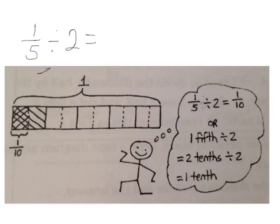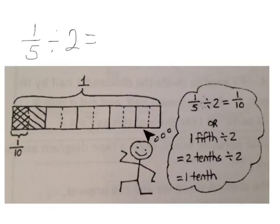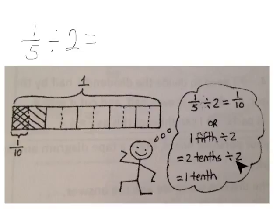Here we're asked to find what is one-fifth divided by two. We start with a whole of one divided into fifths. We're going to take just one-fifth and divide it into two parts. We're going to do that with all the other parts though, so that our unit stays the same across the whole. So we have one-fifth divided by two, and that equals one-tenth. One-fifth divided by two is two-tenths divided by two, and that equals one-tenth.